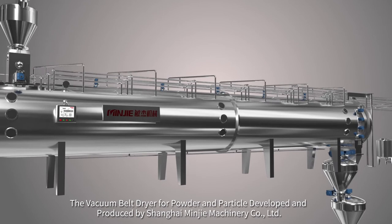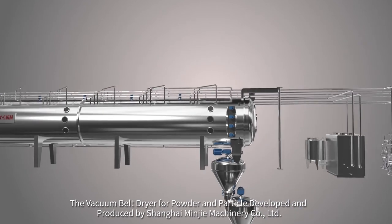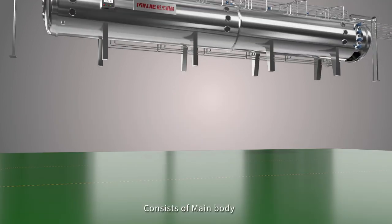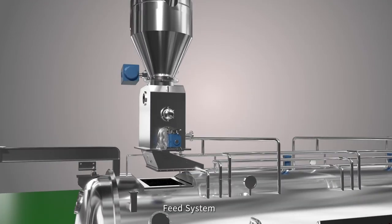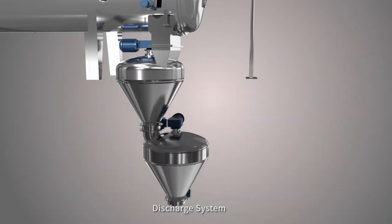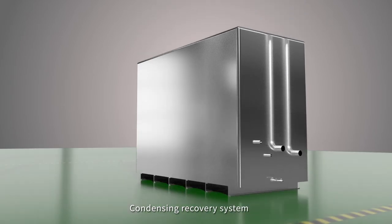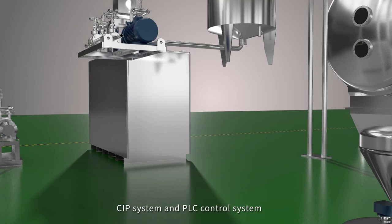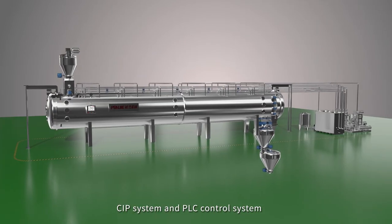The vacuum belt dryer for powder and particle developed and produced by Shanghai Minji Machinery Co., Ltd. consists of main body, feed system, discharge system, condensing recovery system, vacuum system, heating system, CIP system, and PLC control system.